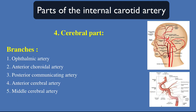Branches of the cerebral part: number one, ophthalmic artery; number two, anterior choroidal artery; number three, posterior communicating artery; number four, anterior cerebral artery; number five, middle cerebral artery.